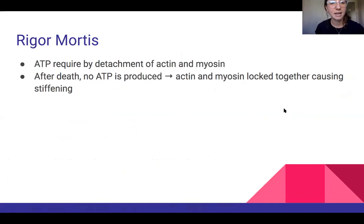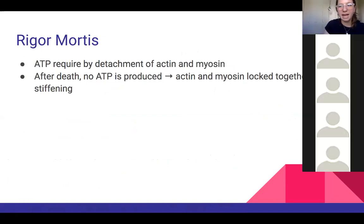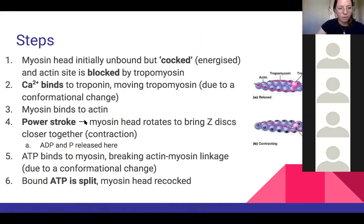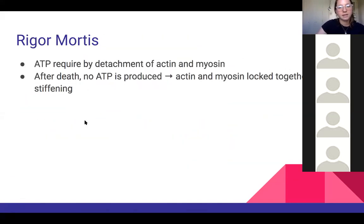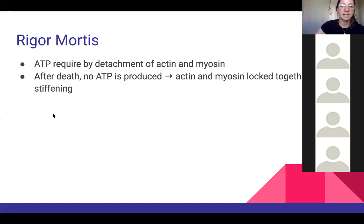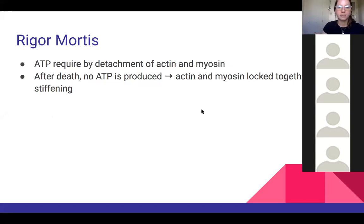A clinical application is rigor mortis — the stiffening of the body after death. After death, metabolism stops and ATP is no longer produced. Because ATP is required to break the actin-myosin linkage, without it the cross-bridges cannot detach, creating the characteristic stiffness.